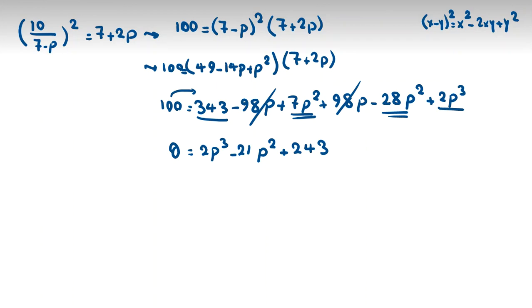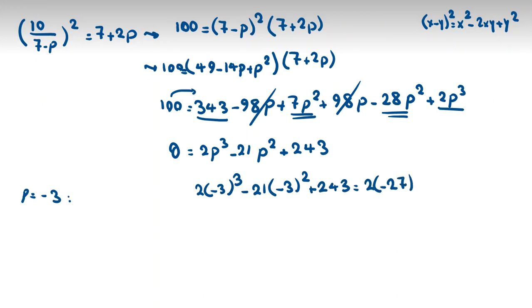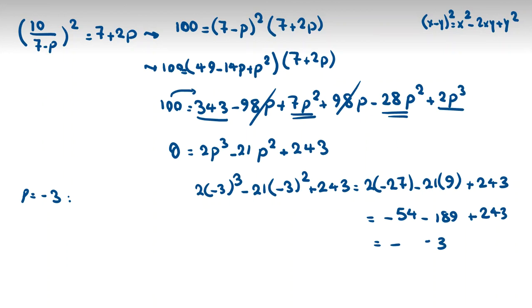The degree is 3. One of the most useful ways to find at least one root is to check p equals 0, 1, negative 1, positive 2, negative 2, negative 3. Negative 3 works. Because if p is negative 3: 2 times negative 27, minus 21 times 9, plus 243 equals negative 54 minus 189 plus 243 equals 0. So p equals negative 3 works.